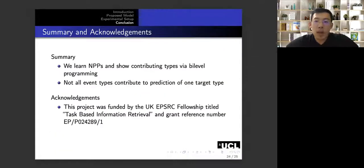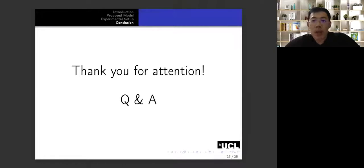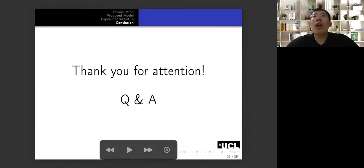So as a summary, in this work, we aim to learn neural point processes and find contributing types at the same time by a bi-level programming technique. And we found that not all event types contributed to the prediction of the other target type. So we would like to acknowledge that this project is funded by the UK EPSRC fellowship with the title of Task-Based Information Retrieval. So yeah, that is the presentation. Thank you for your attention.